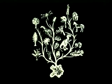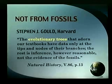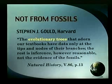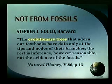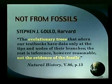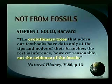Yet when you look in the biology textbook, what do you see? You see the tree of life and they're all connected. Well, they're not connected in the fossil record — they're distinct and separate. The lines are drawn by the evolutionist and arranged in this pattern because that's the theory; that's not what the fossil record tells us. In fact, Stephen Gould says the evolutionary trees that adorn our textbooks have data only at the tips and nodes of their branches. The rest is inference, however reasonable — not the evidence of the fossils.